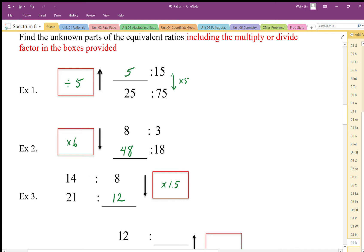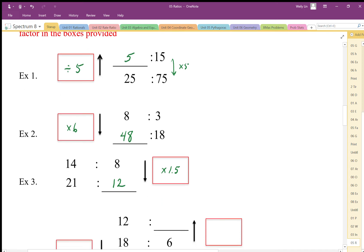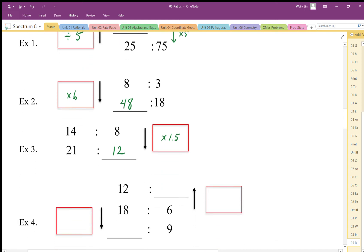14 to 8—8 is slightly bigger than half of 14. 12 is a little bit bigger than half of 21, so that looks about right. And again, we want to make sure that we understand this proportion vertically.